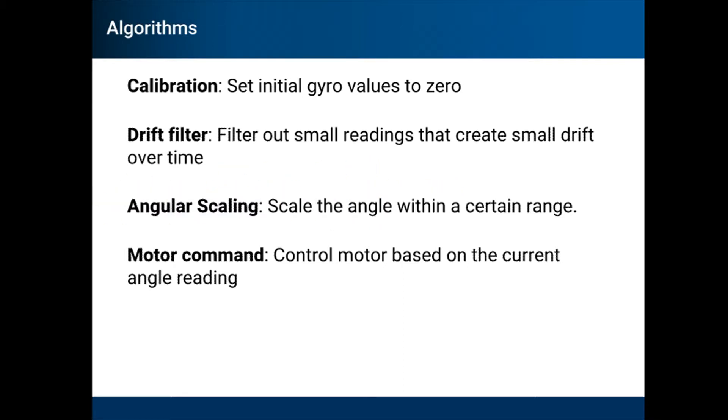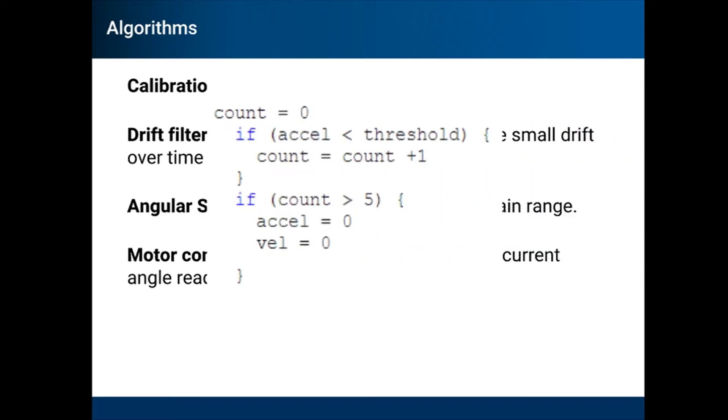The next algorithm created was a drift filter. This filters out the small readings that build up over time and create an ever-growing angle value. To do this, after multiple counts of the angular velocity being below a certain threshold, we set the angular velocity to 0, as well as the change in the angle. This kept the angle from building up.